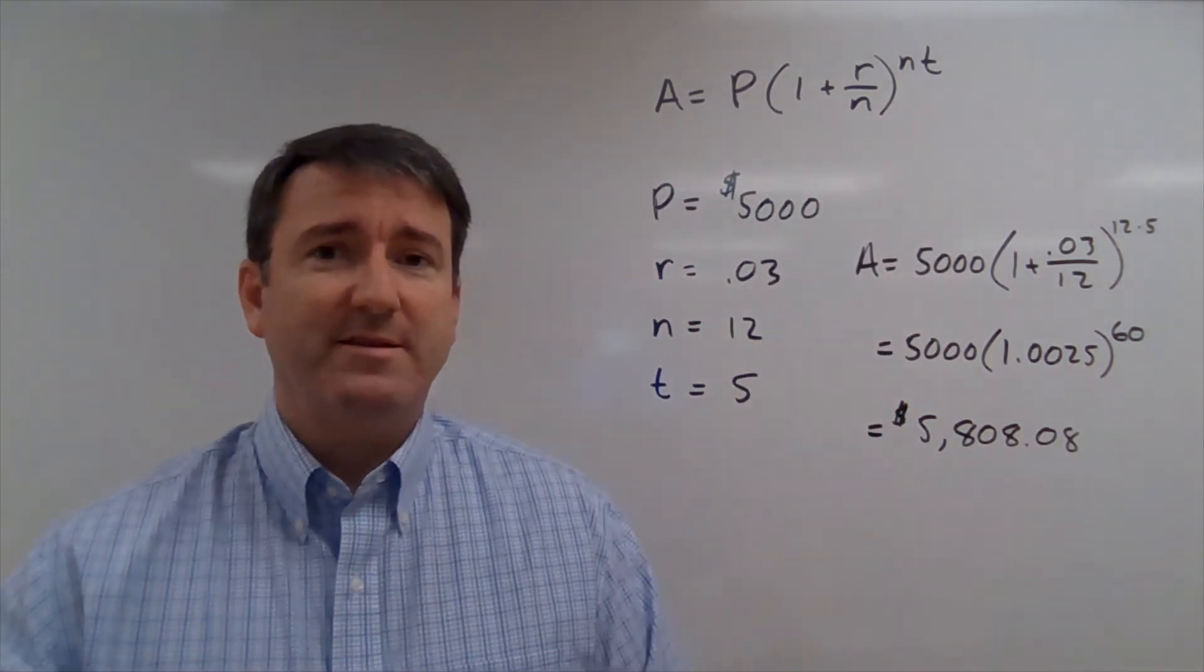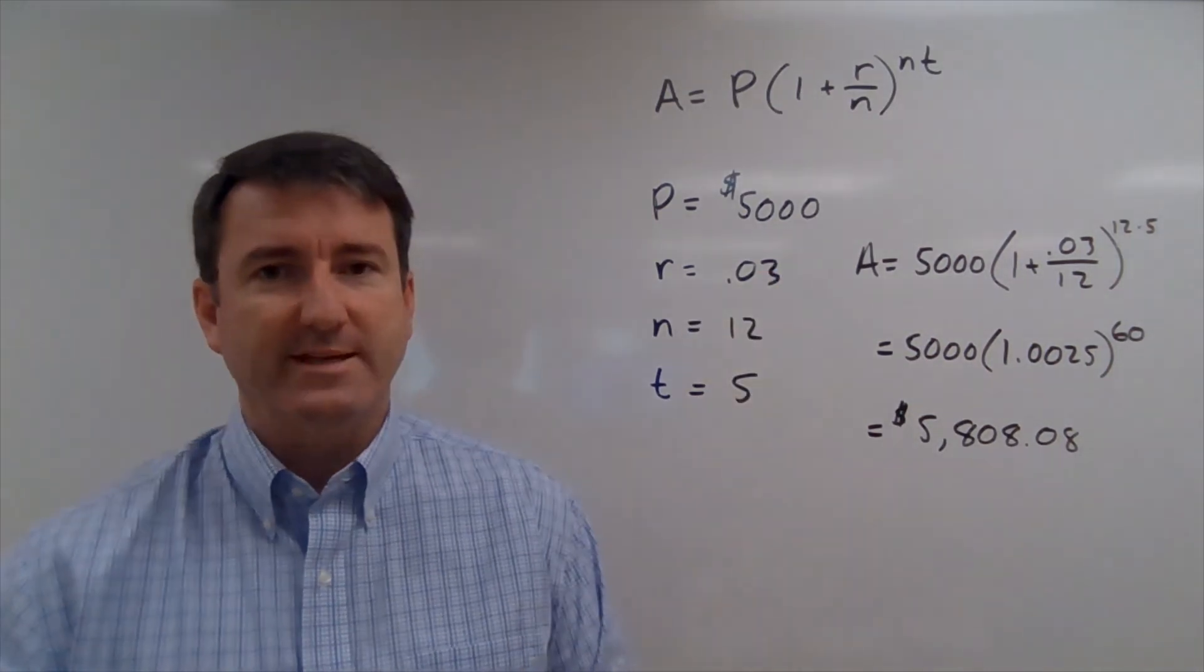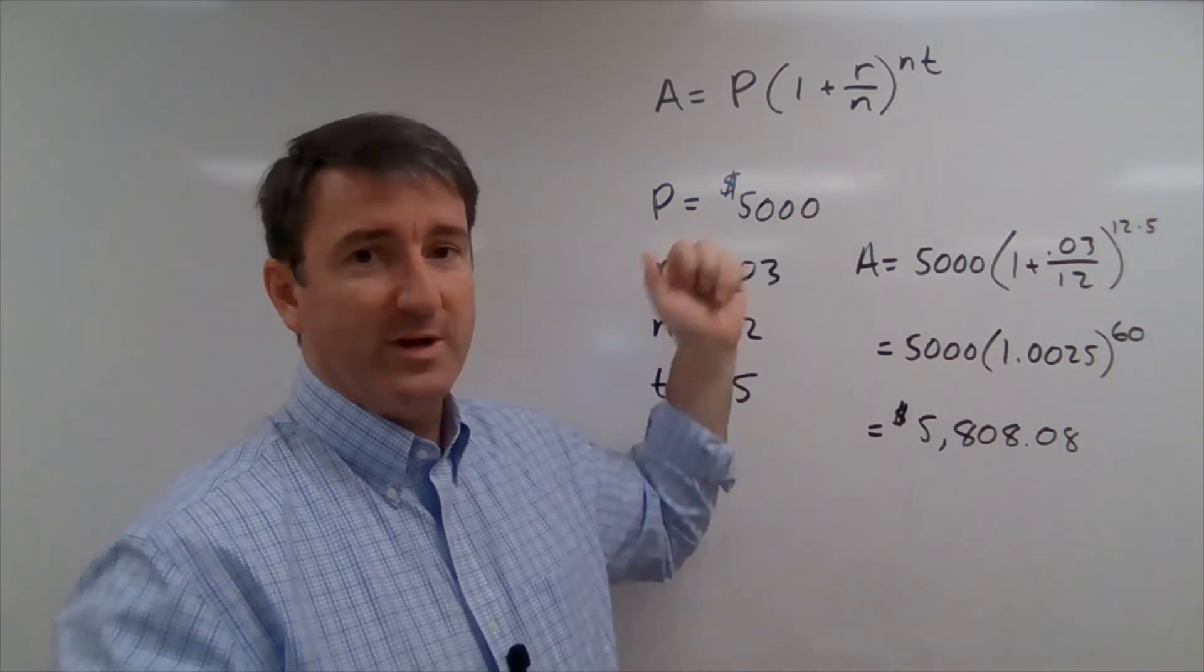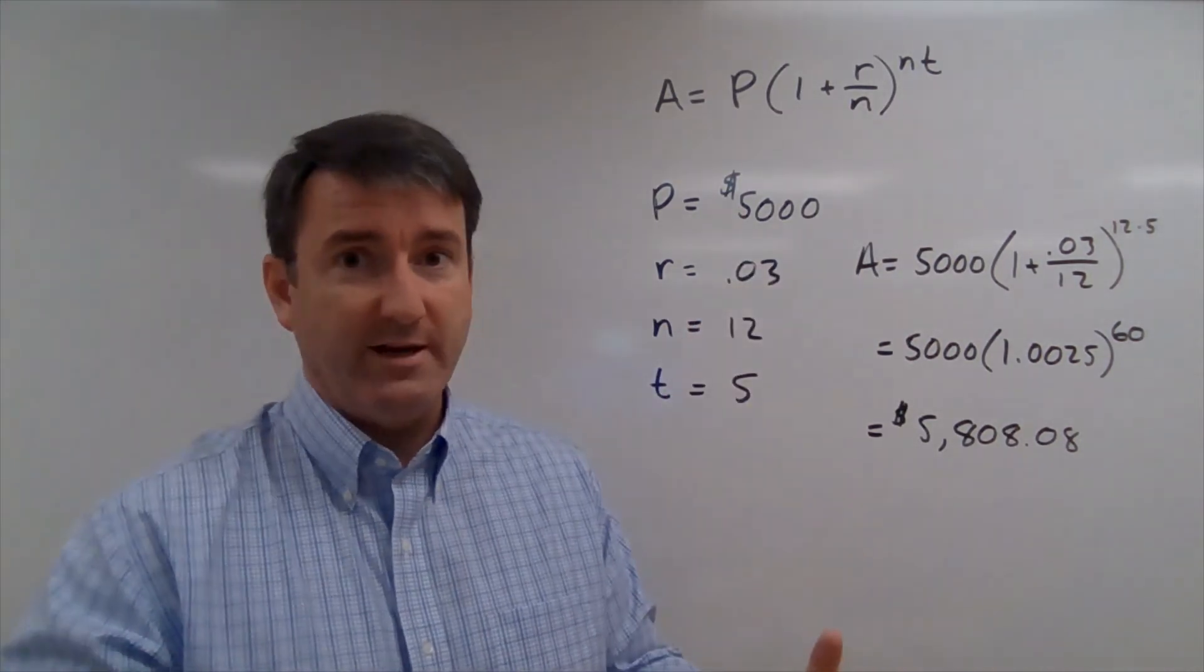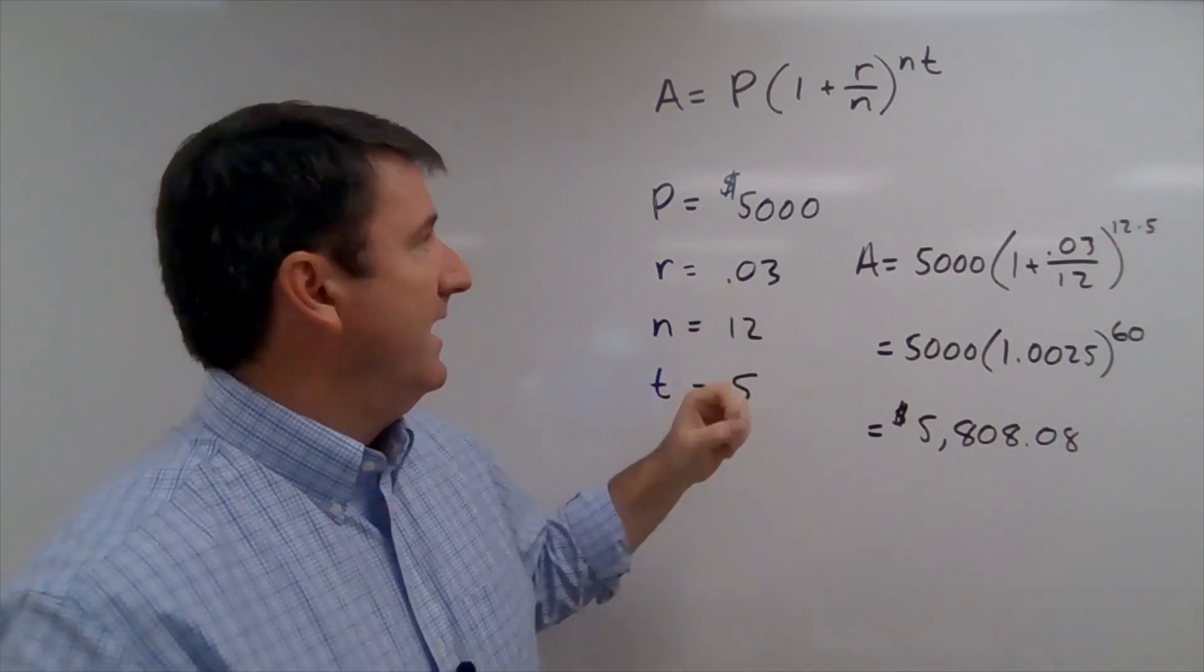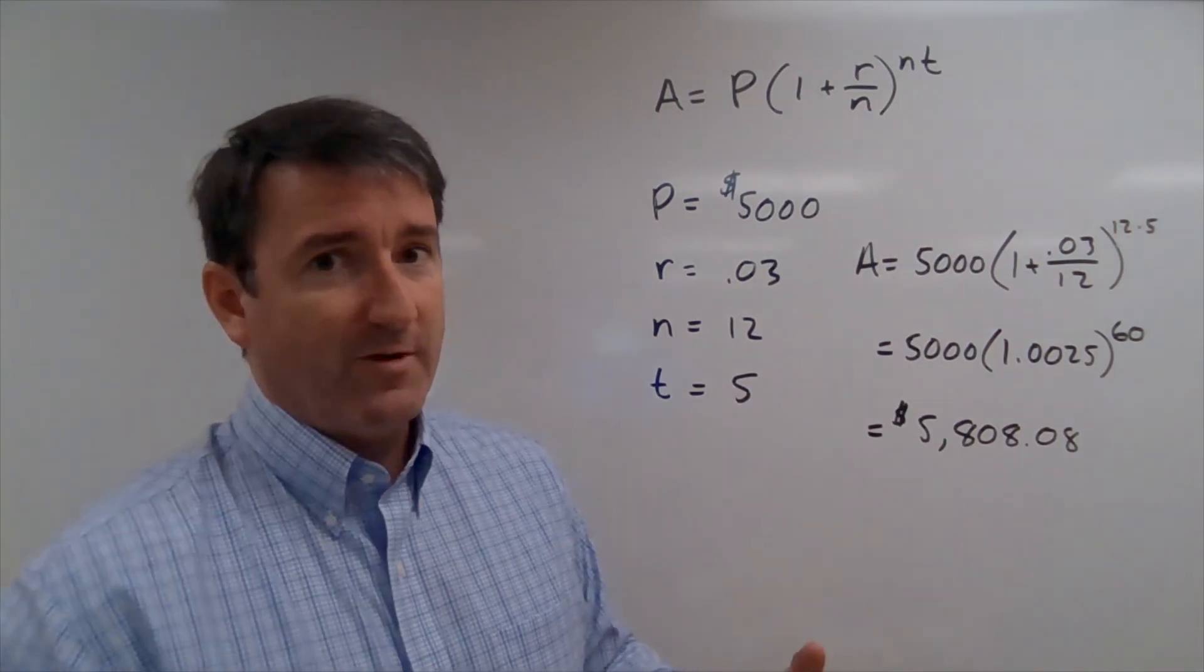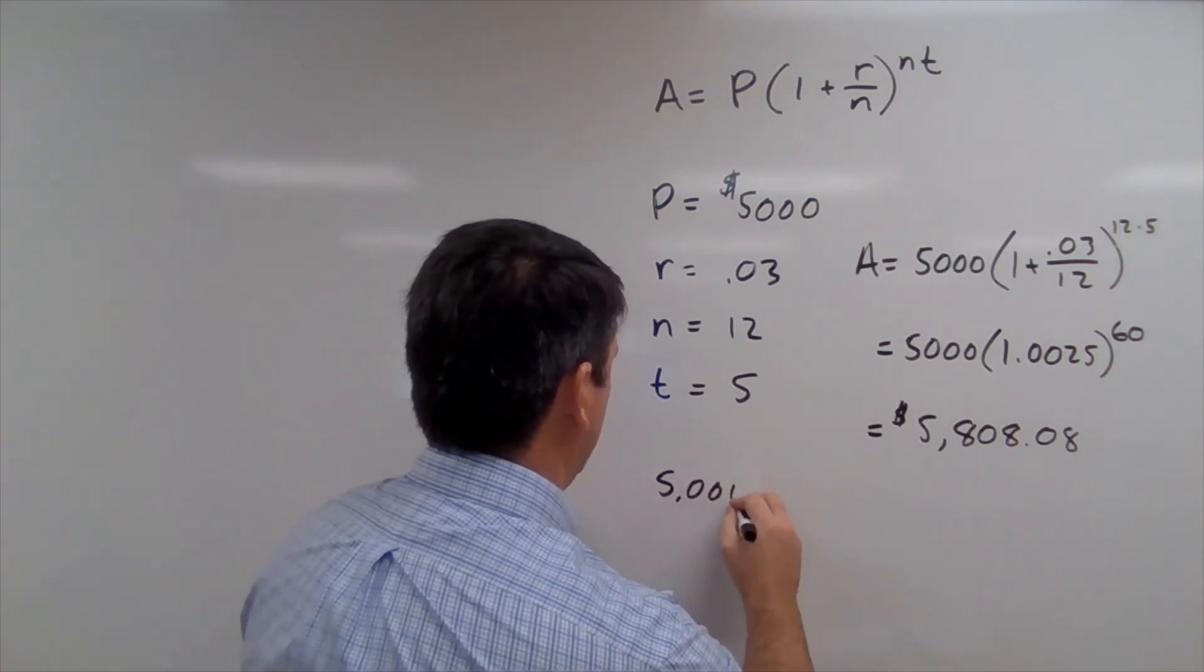All right. Now we're asked to compare this to what we would have gotten if this was just paying simple interest. So simple interest, we're only going to earn interest on this original $5,000. So the interest that we would earn after one year would be 5,000 times 0.03. So that's $150.